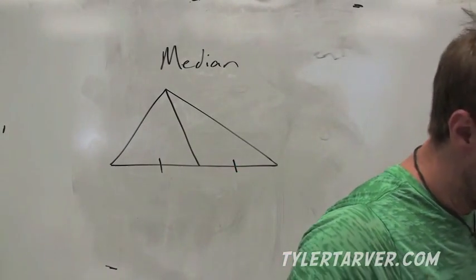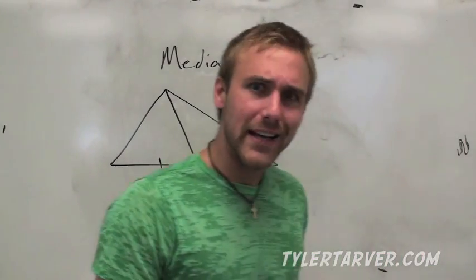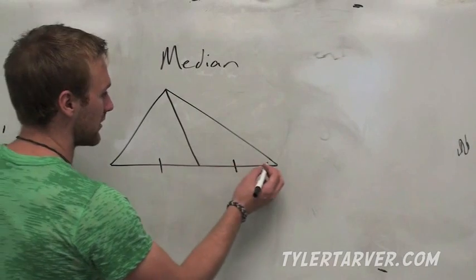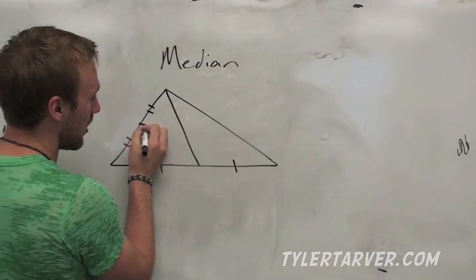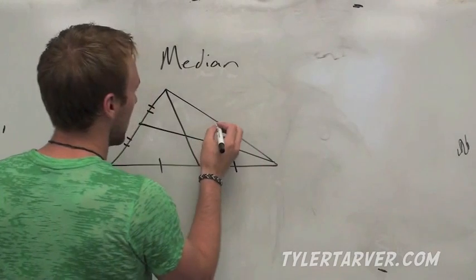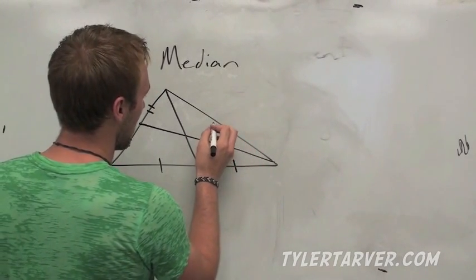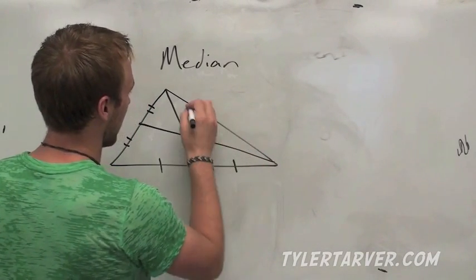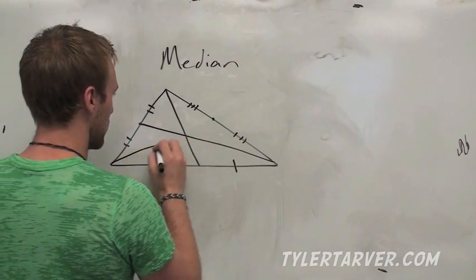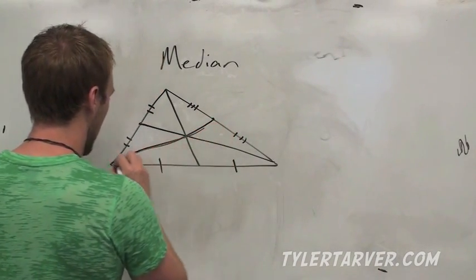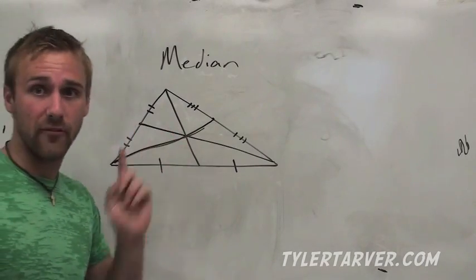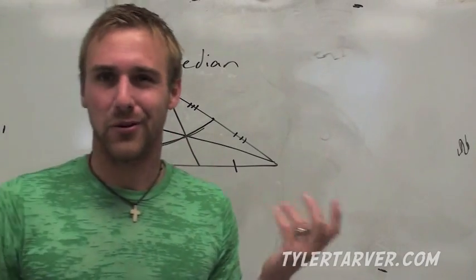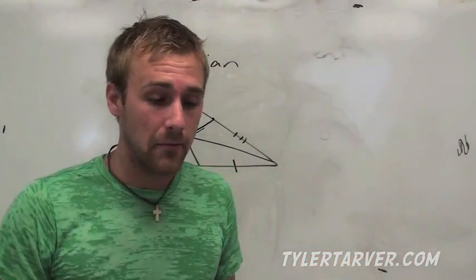Now, if you connect all the medians, guess what? There's going to be a point of concurrency. Let's see. This is the midpoint. So therefore that's the middle of the middle. That's got to be the midpoint right there, right? Now obviously I didn't draw it very well, but if I had, they would all hit perfectly right there in the middle, which they do anyways.